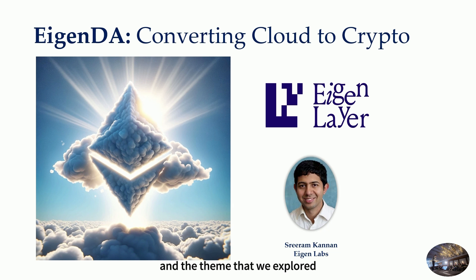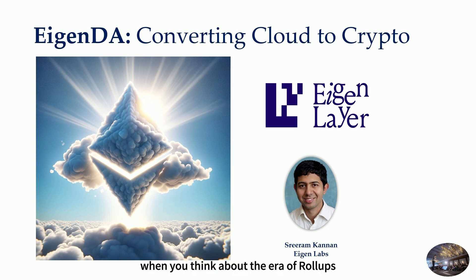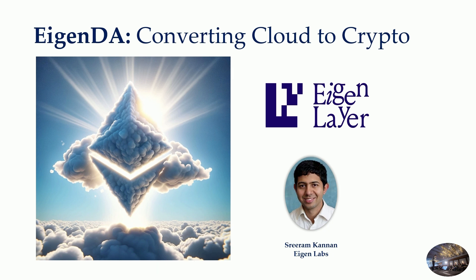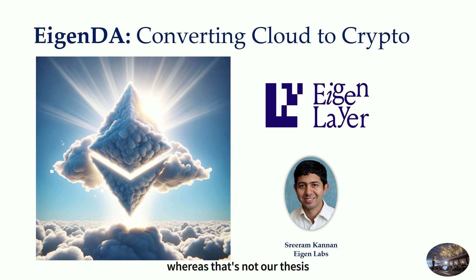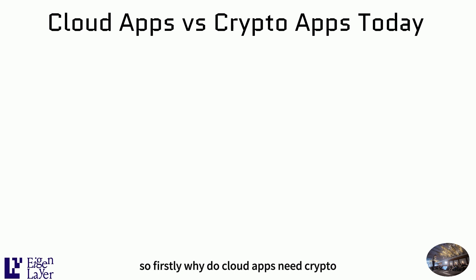The theme that we explored when we built EigenDA is how do we bring cloud to crypto? You can see the logo there in the clouds. When you think about the era of rollups, you may think of two different objectives. One is how do we outsource the Ethereum L1 traffic to a layer 2? Whereas that's not our thesis. Our thesis is how do we bring cloud-scale compute to crypto? So, why do cloud apps need crypto?